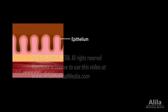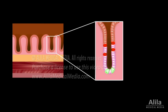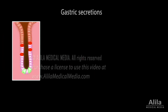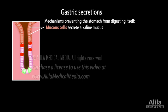The mucosa is lined with a surface epithelium which folds into the underlying connective tissue, the lamina propria, to form tiny holes called gastric pits. At the bottom of these pits are gastric glands producing various secretions. There are four major secretory cell types in these glands. Mucus cells secrete an alkaline mucus that protects the epithelium from gastric acid — one of several mechanisms that prevent the stomach from digesting itself.